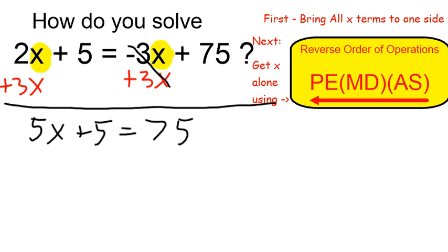That will leave me with 5x plus 5 equals 75, and to undo those operations, I'm going to do it in reverse order of operations.